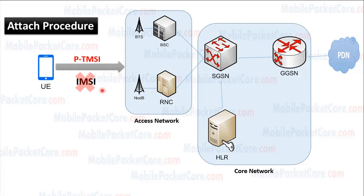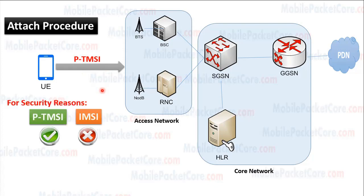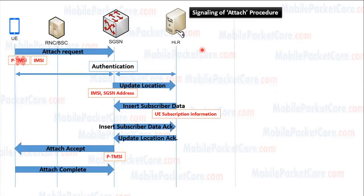This is because from a security perspective, the UE shouldn't frequently send its IMSI to the network. Now let's take a look at how the attach procedure occurs. This diagram shows the signaling of the attach procedure.